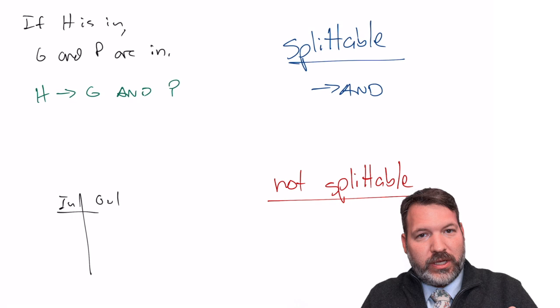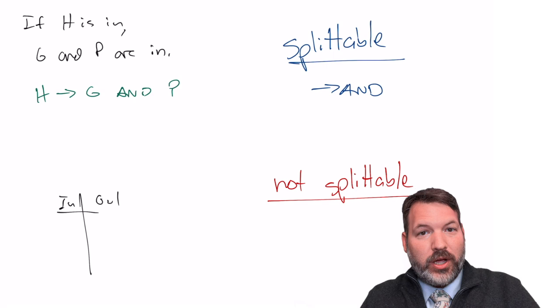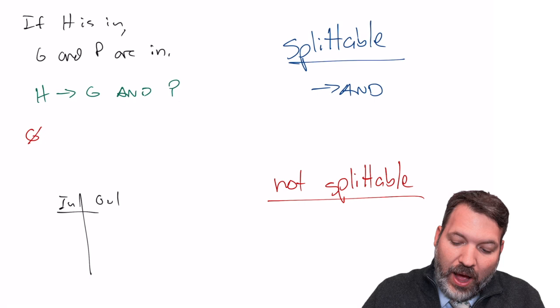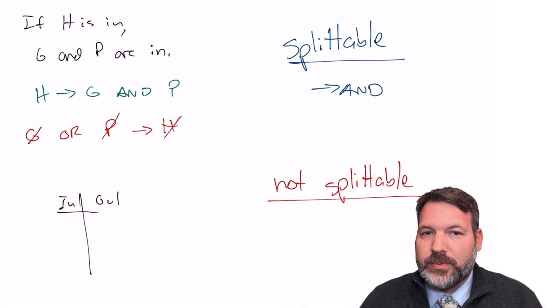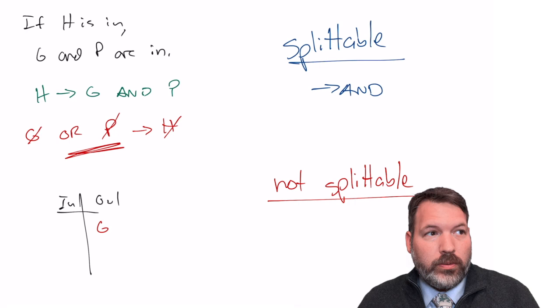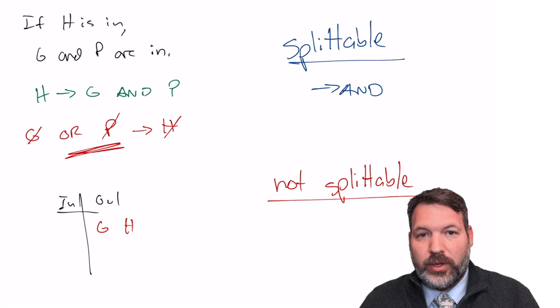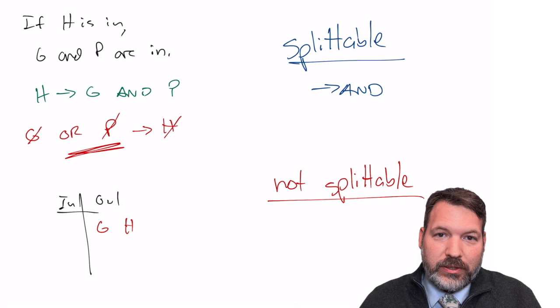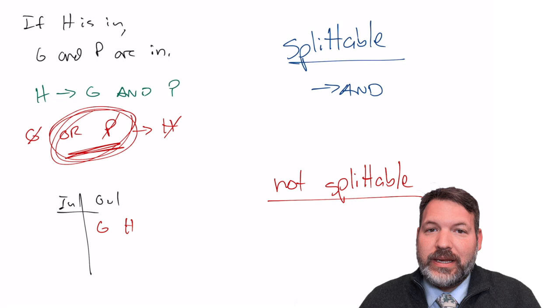Flipping and negating our example — the opposite of AND is OR — gives us: 'if G is out OR P is out, then H is out.' Now let's think about what this means. If we're told G is outside, do we need to know anything about P before concluding H is outside? No — this is an OR statement, so only one part needs to be true to activate the conditional. Seeing G outside is all we need.